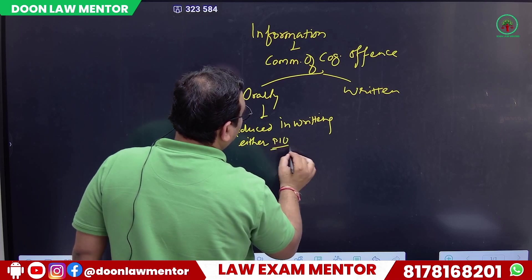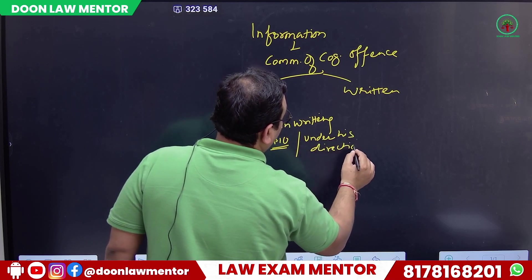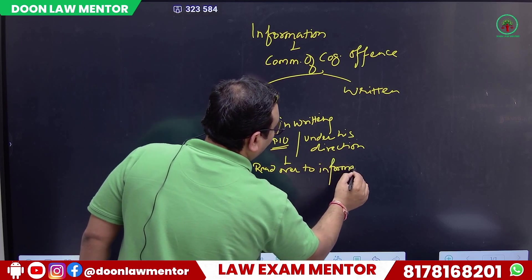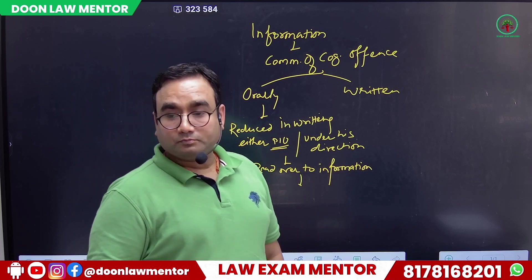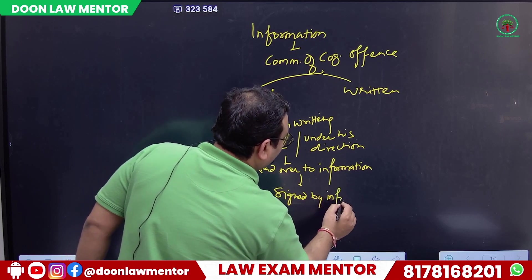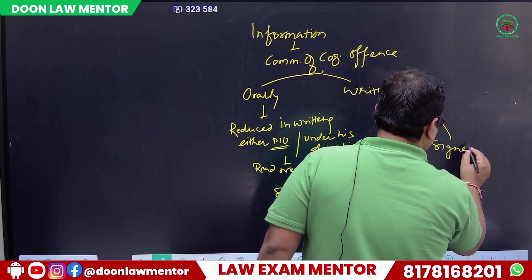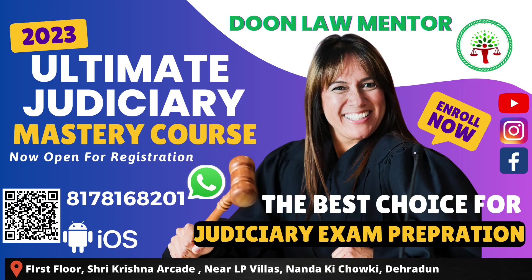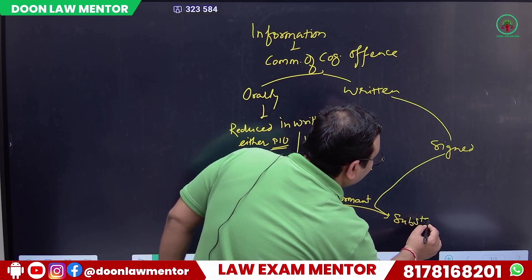Written either by the police officer in charge or under his direction by a subordinate. After writing, it is read over to the informant. After reading over, it is signed by the informant. If information came directly in written form, it goes straight to the signing step — no need to read it back since the informant wrote it themselves.